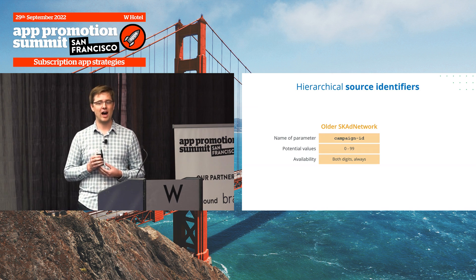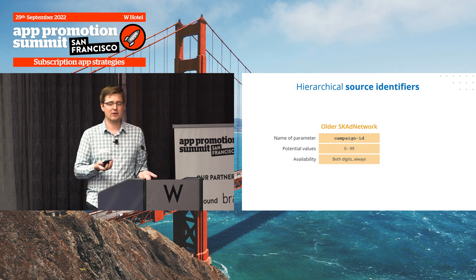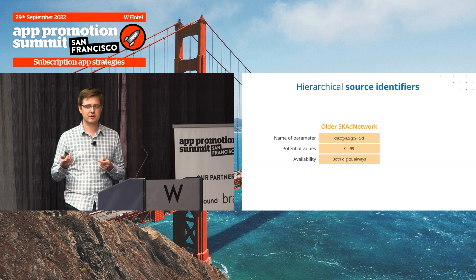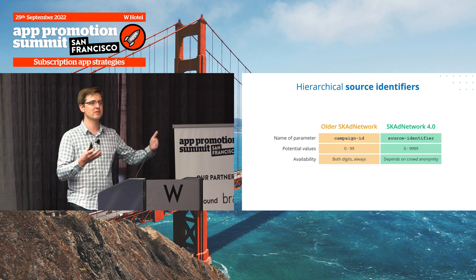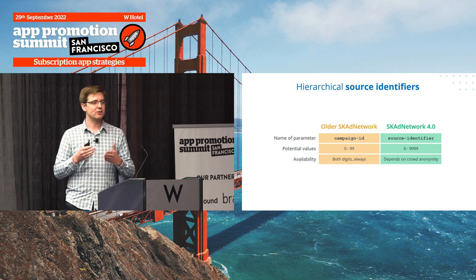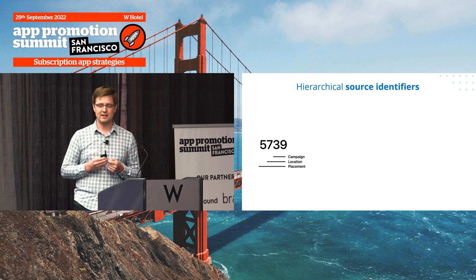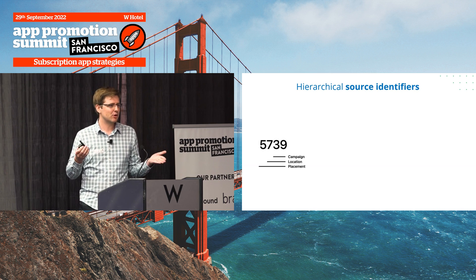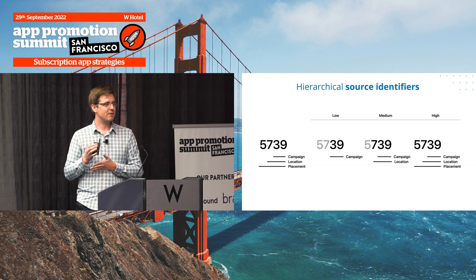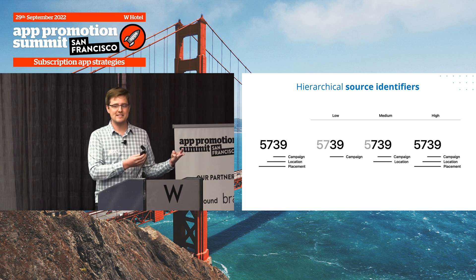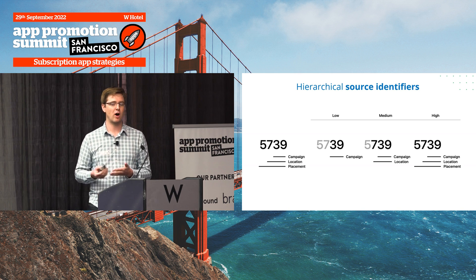The next improvement is what Apple calls hierarchical source identifiers. In the past, you had a campaign ID parameter with one of 100 values — you always got them back, but it was just one of 100. In the new version of SKAdNetwork, you get 10x more space: instead of 1 to 99, it's 0 to 9,999. The number of digits you get back depends on crowd anonymity. For example, with a four-digit source identifier, if you're in the low crowd anonymity bucket you get two digits as before, then three digits in the middle tier, then all four digits at the top. You have layers — more data for optimizing and segmenting campaigns.